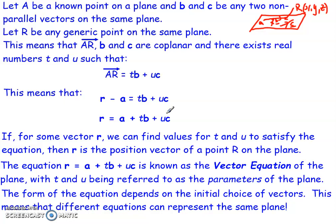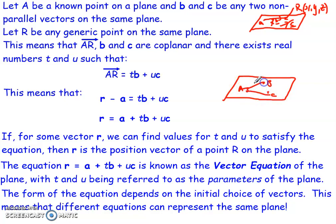A key thing to remember is that the form of the equation depends upon our initial choice of vectors. If we choose different vectors, we get different equations that can represent the same plane. For example, with three points A, B, and C, choosing vectors AB and AC gives a different equation than choosing BA and BC, or CB and CA — but they all still represent the same plane. If you get an answer that's slightly different, double check it because your answer may be correct, just taken with respect to a different point and set of vectors.